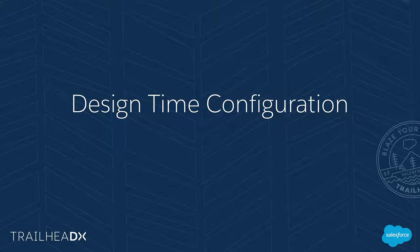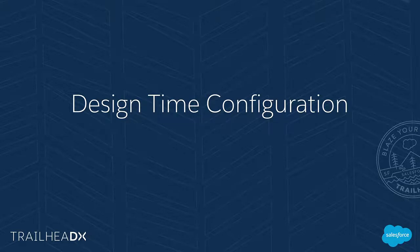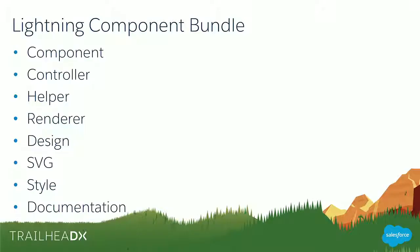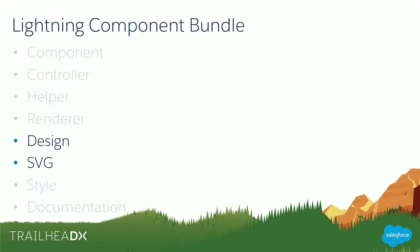Now that we have a component inside App Builder that's styled to fit within containers, let's look at what we can do to make it more configurable. Let's look at the Lightning Component Bundle. There are many resources available: the component, controller, helper, renderer, design, SVG, style, and documentation. We're going to focus on just two: the design and the SVG resource. The design resource contains information used during design time in Builder tools like App Builder — it's a way to expose your attributes for customization. The SVG provides a nice icon for your component.